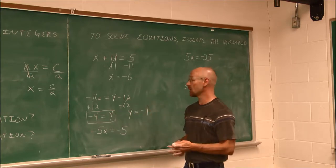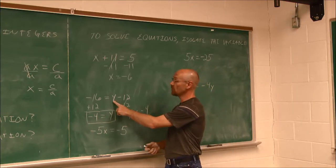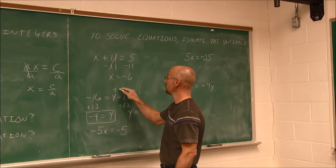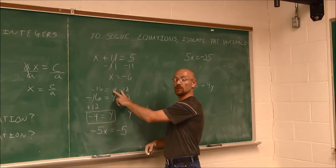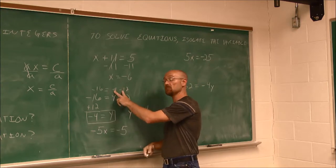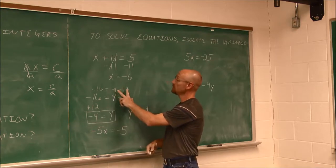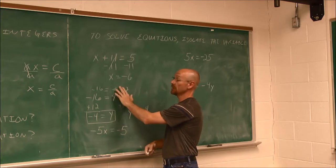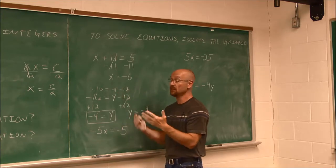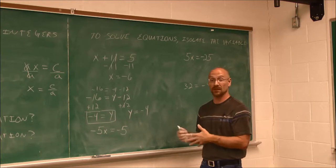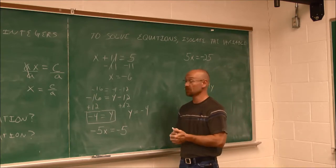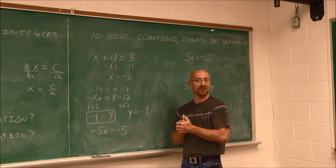Let's check our work. If I put negative 4 in: negative 4 and negative 12 have the same sign, so I combine them — 12 and 4 is 16, and they're negative — giving negative 16. Negative 16 equals negative 16. It doesn't get any more true than that.